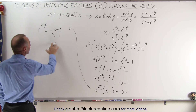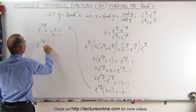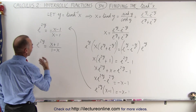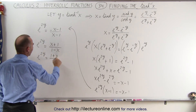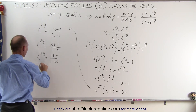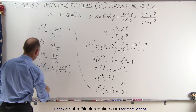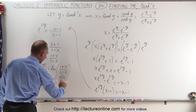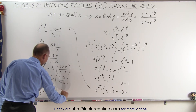We don't like those negatives in the numerator, so we multiply both numerator and denominator by negative 1. That gives us e to the 2y equal to x plus 1 divided by 1 minus x, or equivalently 1 plus x divided by 1 minus x. Now we take the natural log of both sides: the natural log of e to the 2y equals the natural log of the quantity 1 plus x divided by 1 minus x, so 2y equals that natural log, and therefore y equals one half times the natural log of 1 plus x divided by 1 minus x.